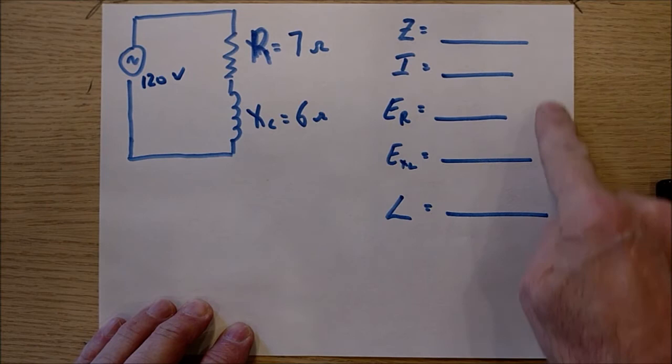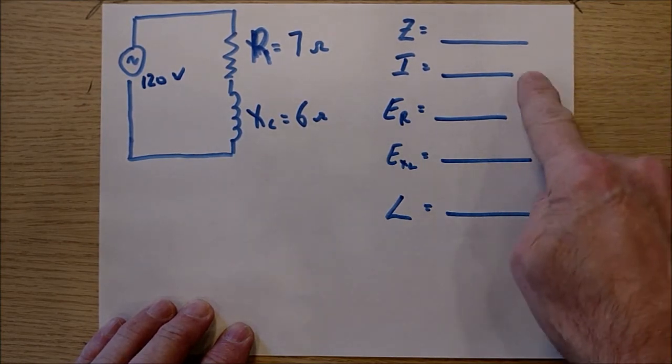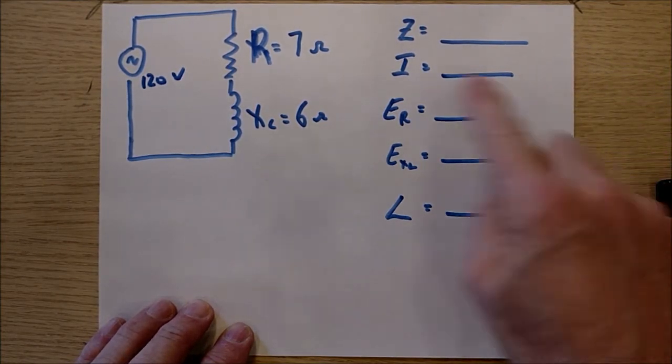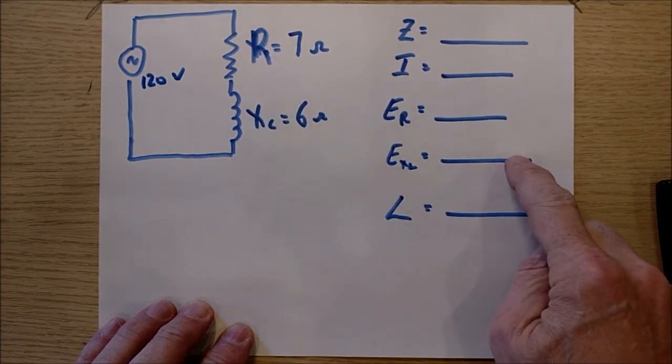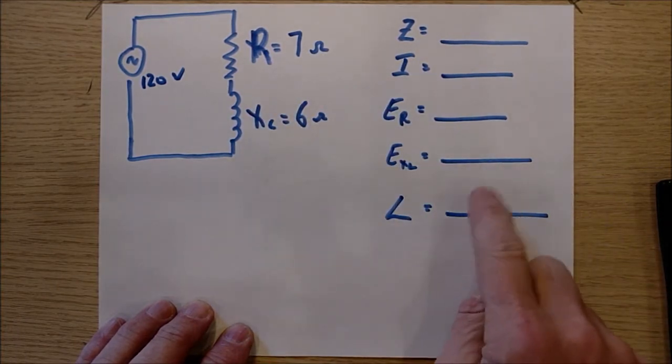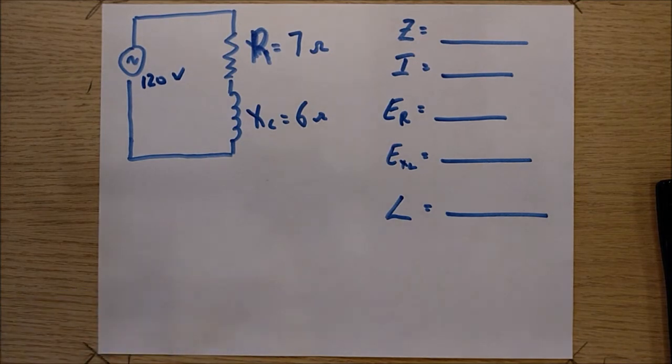What we're going to do quite quickly here is calculate the impedance of the circuit, the current in the circuit, the two voltage drops, ER and EXL, and then we're going to calculate the phase angle. So let's do this.